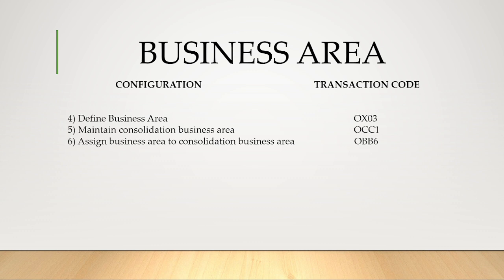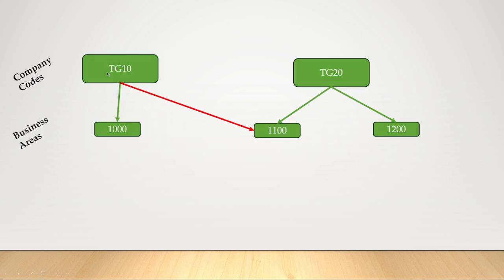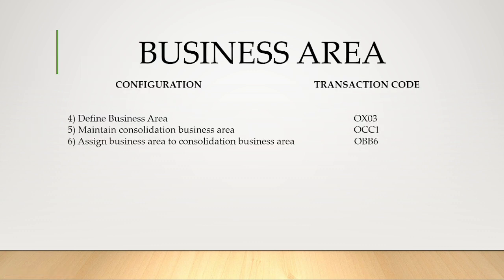Let us understand with an example. We have two company codes: TZ10 and TZ20. Business area 1000 is created for TZ10, 1100 and 1200 for TZ20. While posting, a user might wrongly select business area 1100 for TZ10, leading to wrong postings. Just for demonstration, I am going to configure the business area, but the profit center concept — where you can transfer both cost and revenue — is more advantageous.